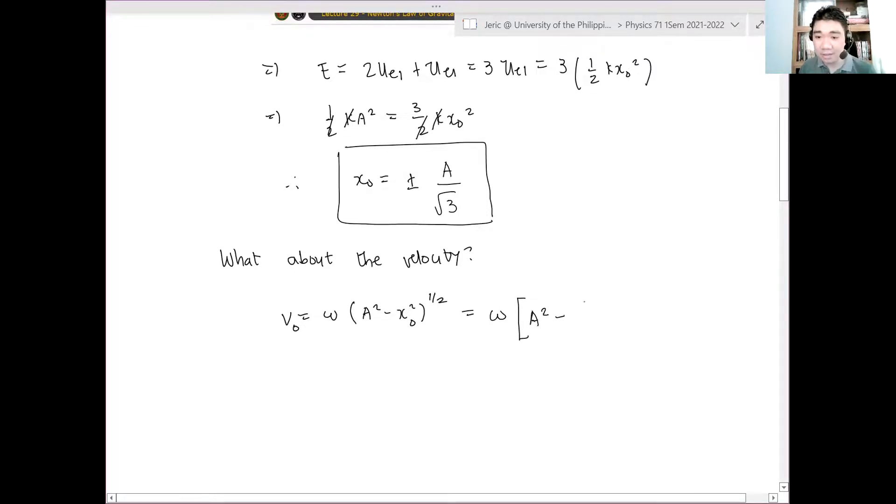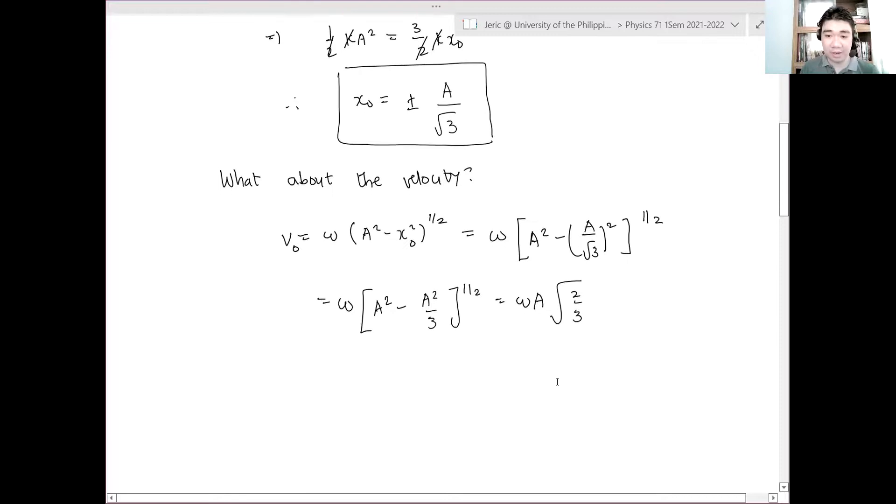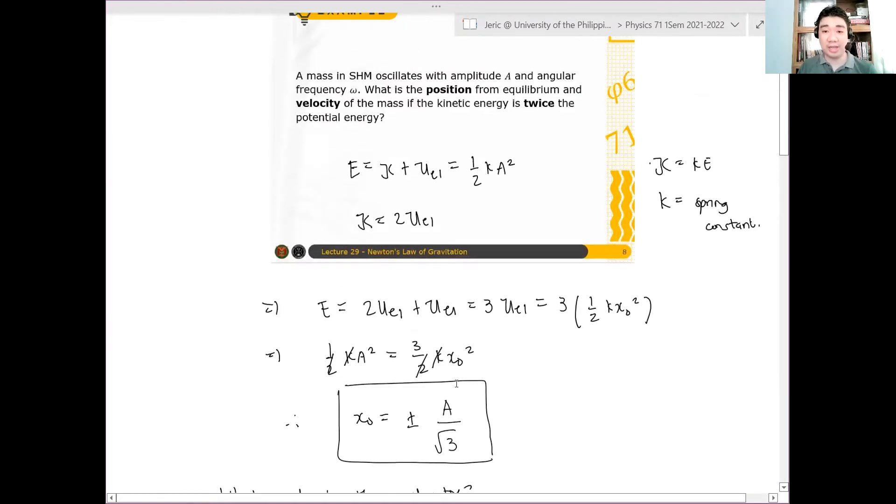And this is just equal to omega multiplied by A squared minus A over square root of three quantity squared all in square root. And therefore, you have omega multiplied by A squared minus A squared over three quantity raised to one half. And this is just equal to omega A square root of two-thirds. That is the velocity of the particle, when it's located at A over square root of three. In that case, the kinetic energy is twice the potential energy.